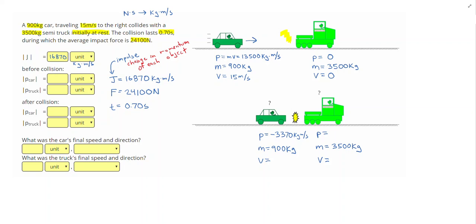Let's go ahead and actually write in some answers that we already have. So for the car, we have an initial momentum of 13,500 kilogram meters per second. That's going to be the same for all of these units. And for the truck, we had zero initial momentum. Remember that these bars mean magnitude. So even though we got a negative number for the momentum of the car, that negative just means to the left. And the magnitude of the momentum is 3370.